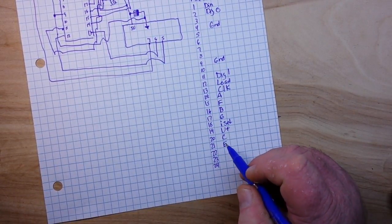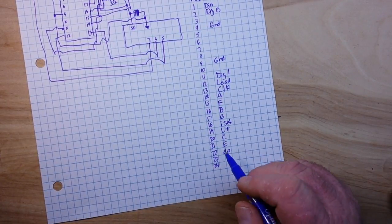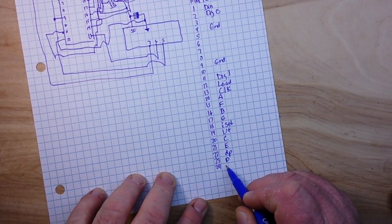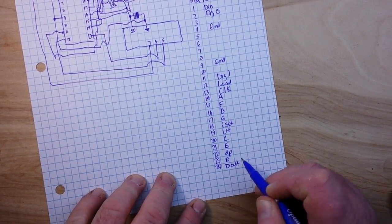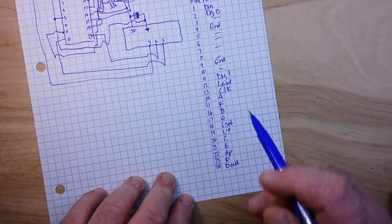21 is E, 22 is your decimal point, 23 is D, and 24 is D out. Now these ones that I didn't mark here are just for more segments.